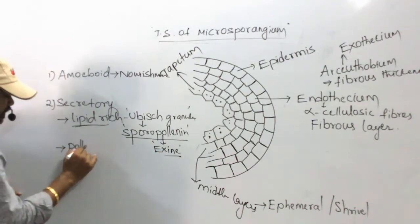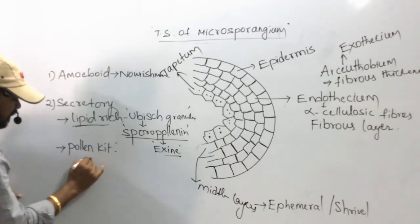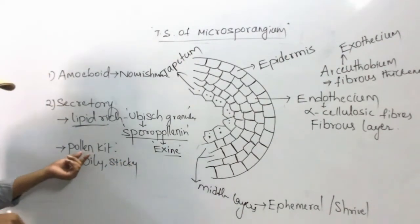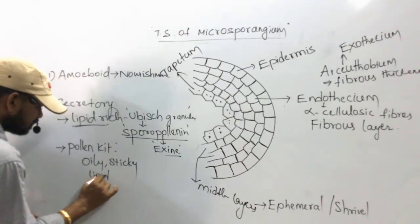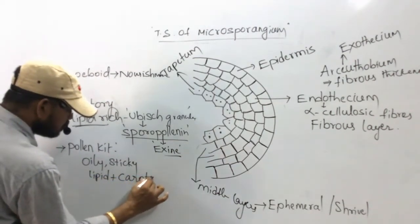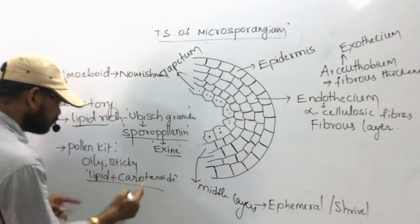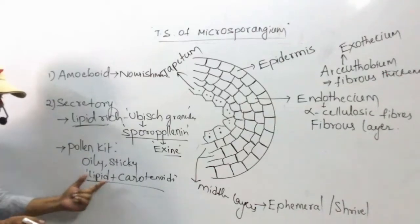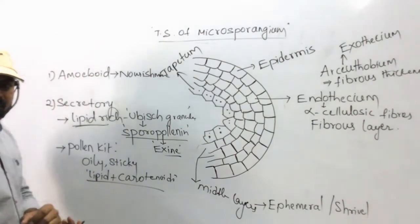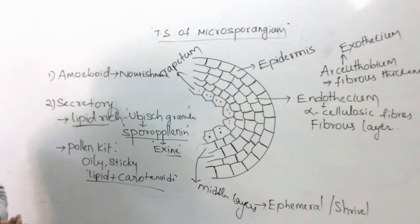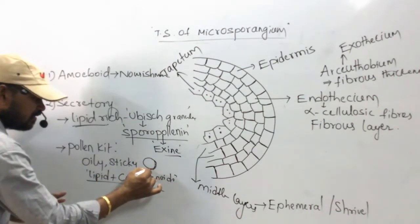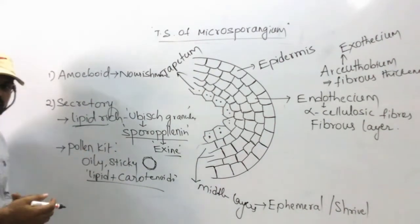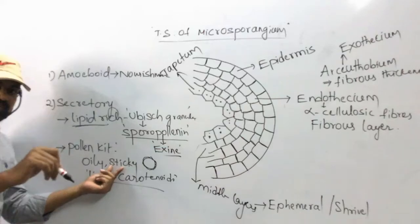The next substance secreted is pollenkitt, which is an oily and sticky material or substance around the pollen grain. Chemically, it is made up of lipids and carotenoids. Pollenkitt is involved in pollination — in entomophilous plants, the sticky pollen grain surface allows pollen to stick easily to pollinators.